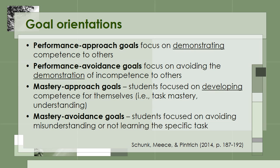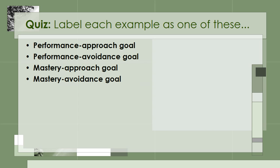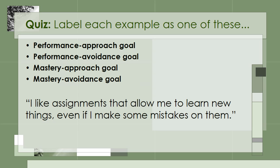Now I'm going to give you a quiz to see if you understand the difference between these four goal orientations. Label each of the following examples as one of the following: Performance Approach Goal, Performance Avoidance Goal, Mastery Approach Goal, or Mastery Avoidance Goal. The first one is a student who says, 'I like assignments that allow me to learn new things, even if I make some mistakes on them.' Pause the video if you need more time. Because this student is focused on developing his competence, even if he makes mistakes, it's considered a Mastery Approach Goal.